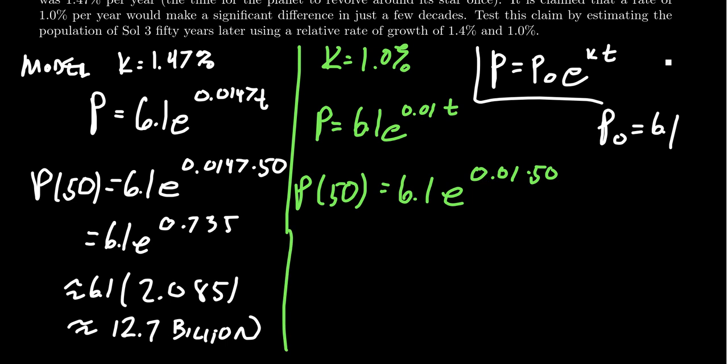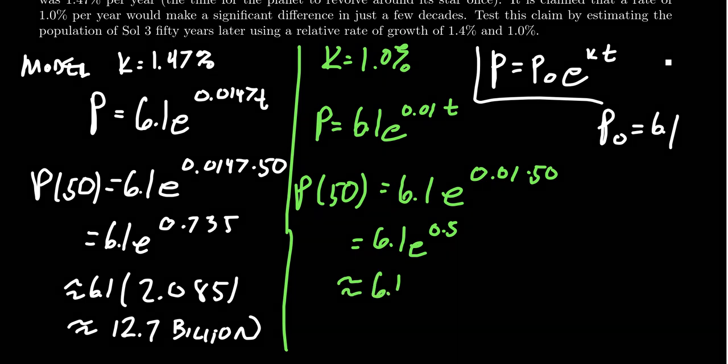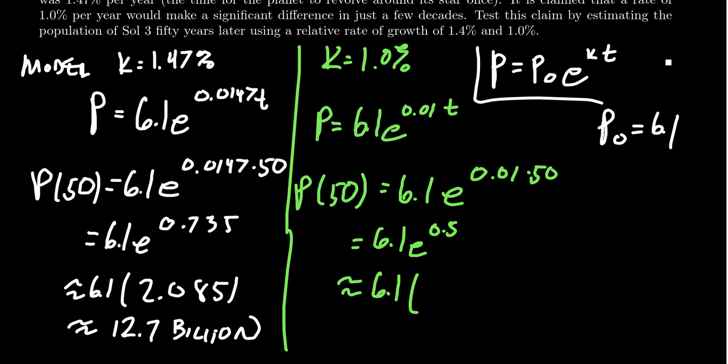If we did that with a 1% growth rate, we're going to take 6.1 times E. You're going to take 0.01 times 50, which is going to give you 0.5 in that situation. For which then when you raise E to the 0.5, so we're taking the square root of E in this situation, you end up with 1.649. And then you times that by 6.1, you end up with 10.1 billion in that situation. And so those are the numbers you want to compare.